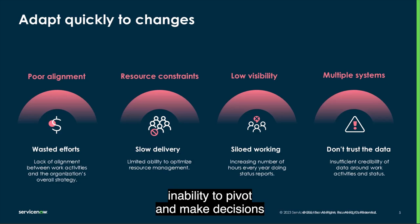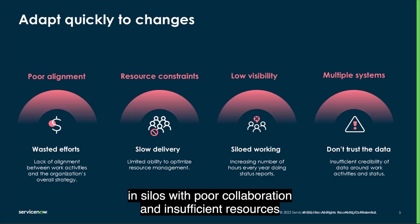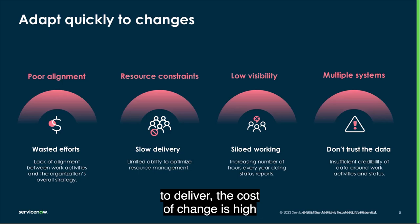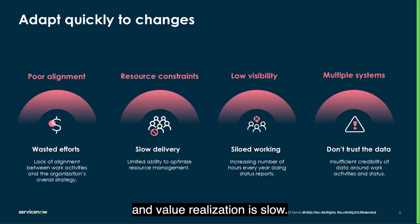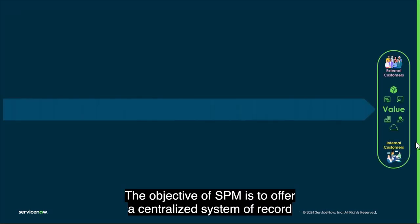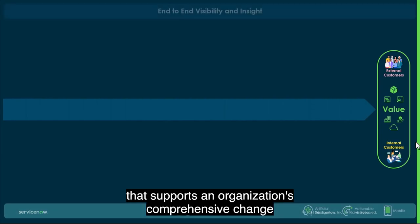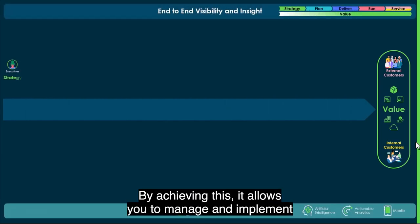Inability to pivot and make decisions quickly due to the absence of reliable data. Teams working in silos with poor collaboration and insufficient resources to deliver. The cost of change is high and value realization is slow. The objective of SPM is to offer a centralized system of record that supports an organization's comprehensive change and governance framework.